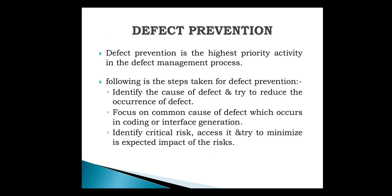First is defect prevention. Defect prevention is the highest priority activity in the defect management process, meaning your focus is mainly that defects must not occur in your system. The following steps are taken for defect prevention to prevent the occurrence of defects in your system.